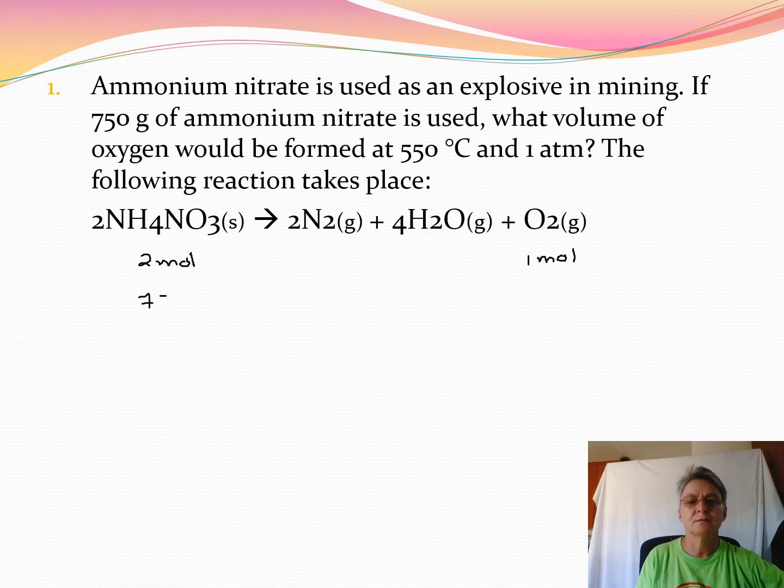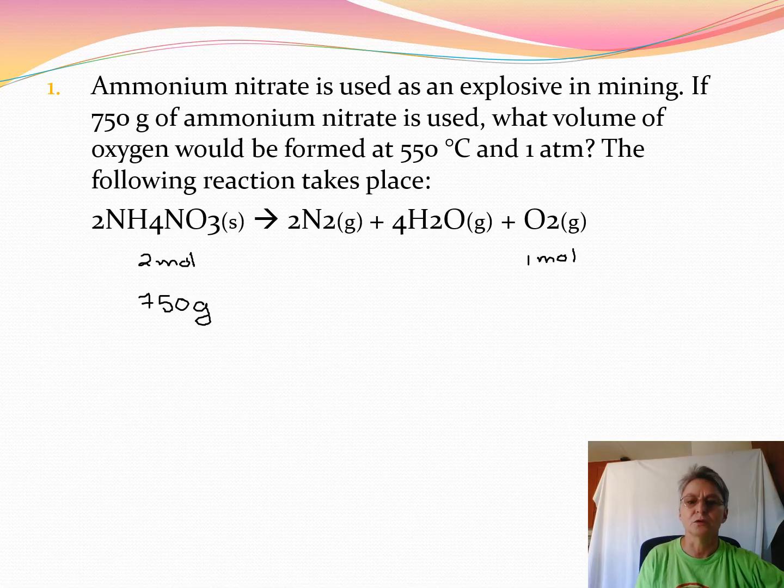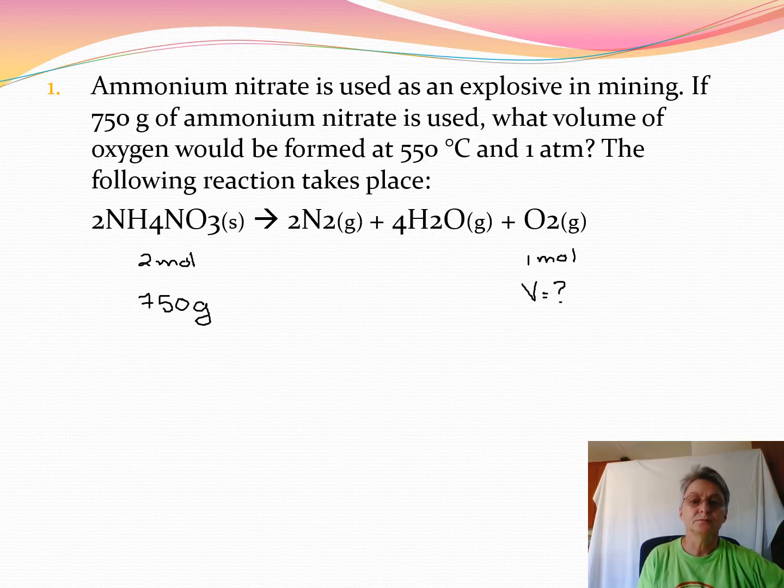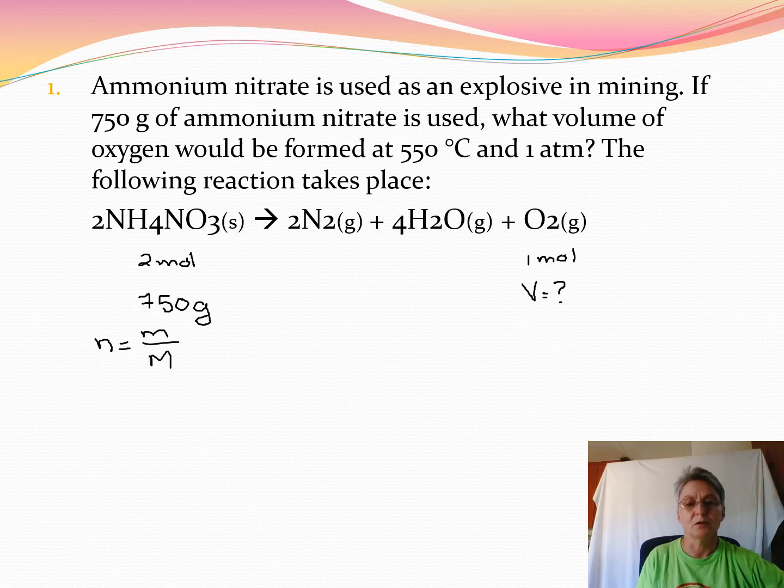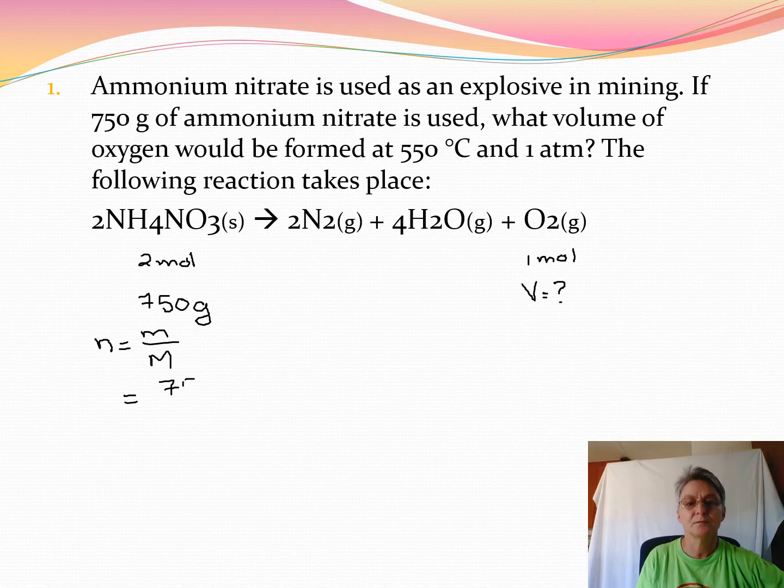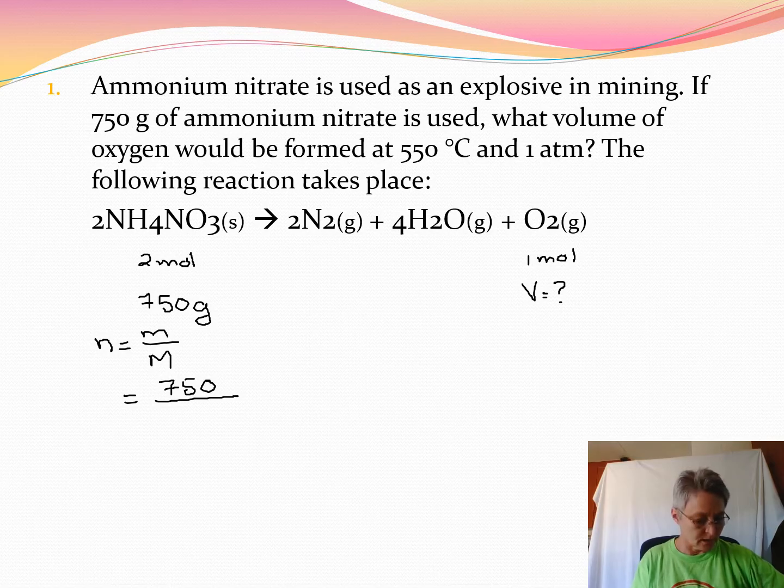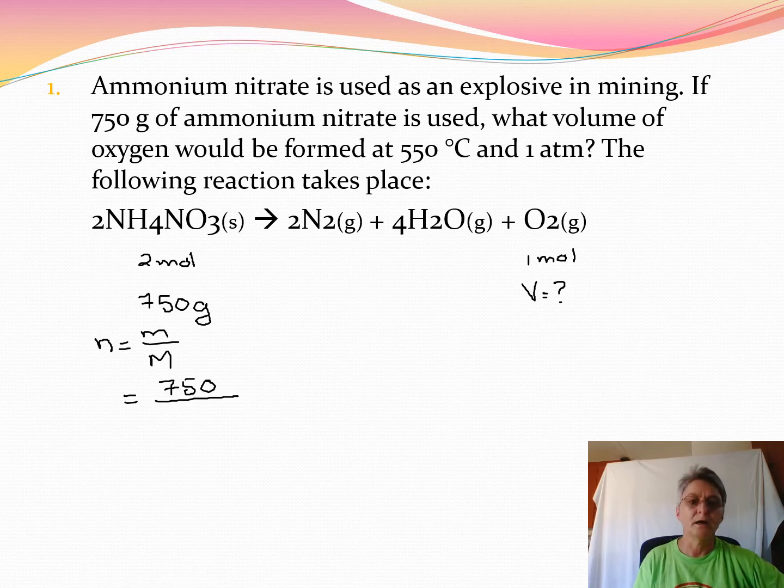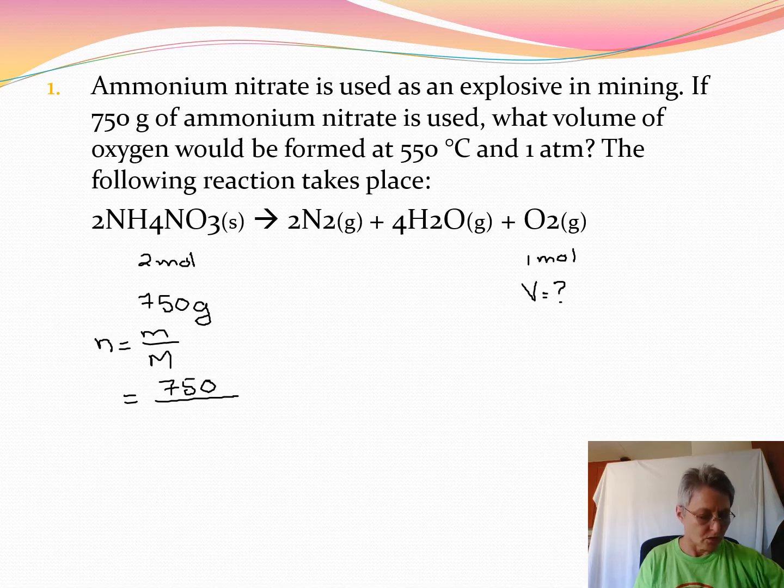750 grams of ammonium nitrate is what we start with and they want to know what volume of gas will form. So change the mass into moles by taking mass dividing it by molar mass. Mass is 750. The molar mass is 28 for the two nitrogens plus 4 for the hydrogens plus 48 for the three oxygens, so it is 80 grams per mole.